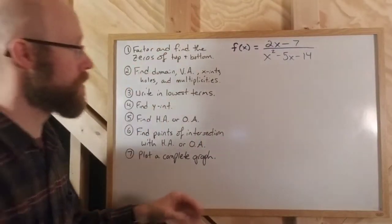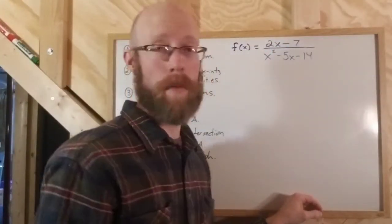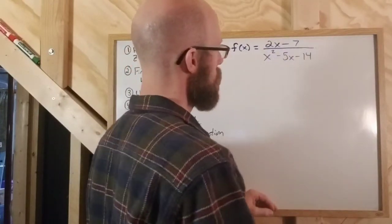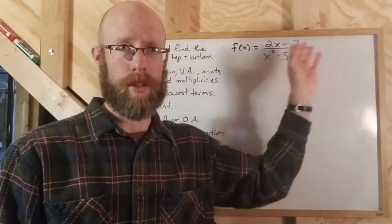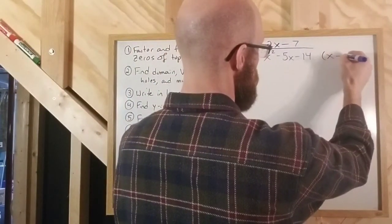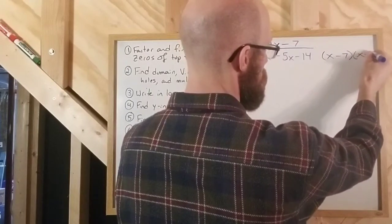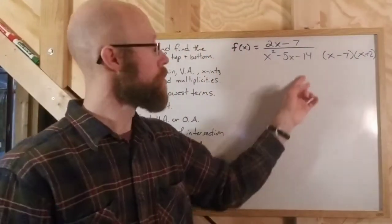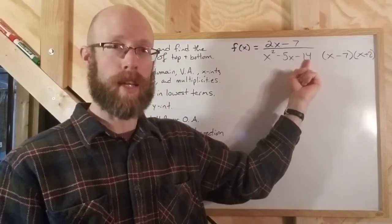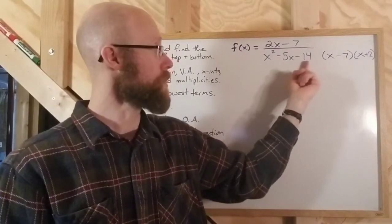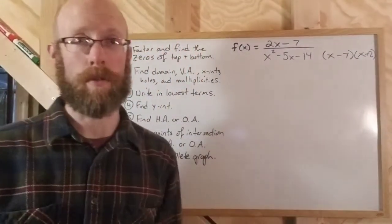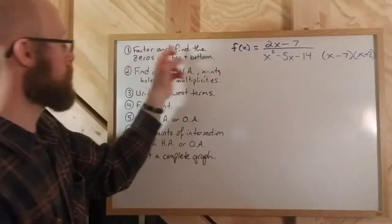So the first thing we're going to do is factor. The numerator here actually doesn't factor — 2x minus 7. You could pull a 2 out and write it as x minus 7 halves, but I'm just going to leave it as 2x minus 7. The denominator, however, does factor — into x minus 7 and x plus 2. Remember, if the leading coefficient is 1, you want factors of the constant that add up to the middle term. Factors of negative 14 that add up to negative 5 are negative 7 and positive 2.